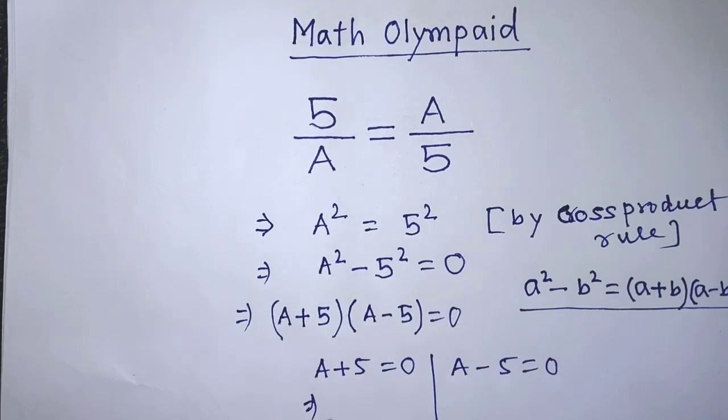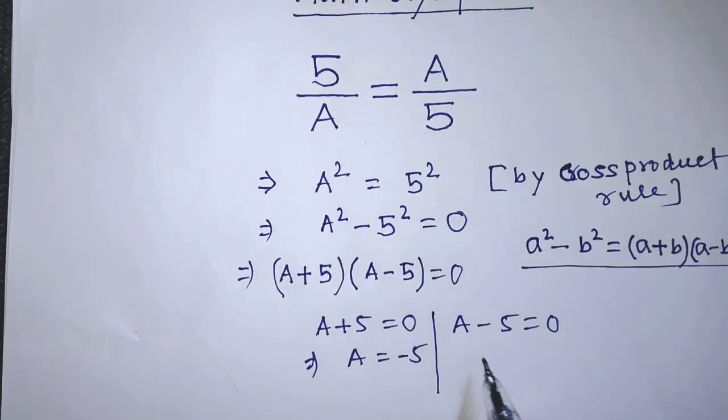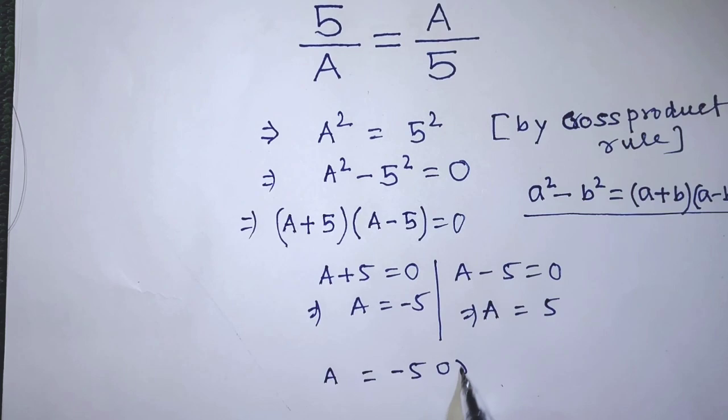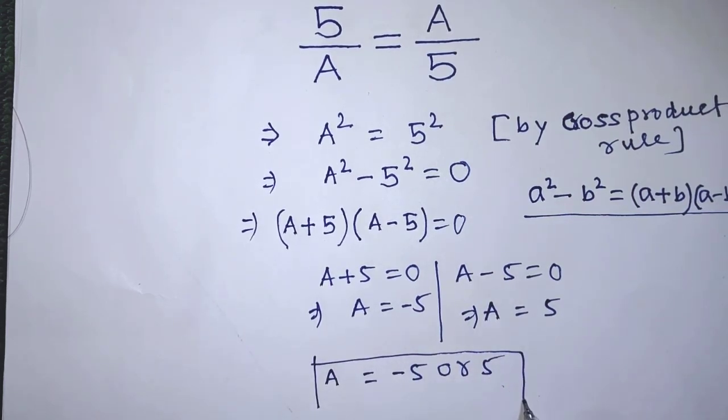Now we can write from this equation A equals minus 5, and we can write from this second equation A equals 5.